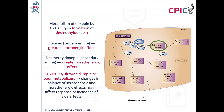In CYP2C19 ultra-rapid, rapid, or poor metabolizers, there can be changes in the balance of serotonergic and noradrenergic effects — with greater noradrenergic effects in ultra-rapid and rapid metabolizers and greater serotonergic effects in poor metabolizers. This may affect response or incidence of side effects.